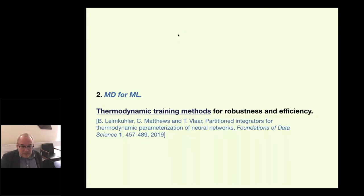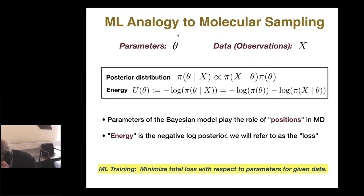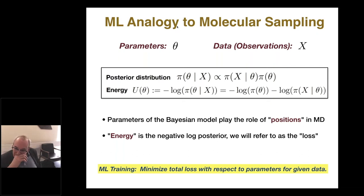The second topic is using molecular dynamics for machine learning. The idea is to use an analogy between machine learning and the loss landscape and the energy function — viewing the parameters of the Bayesian model as positions in molecular dynamics. This gives you a way to explore the landscape differently than people are currently using, making a more varied approach to the optimization and selection of parameters.